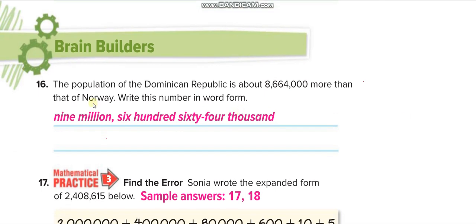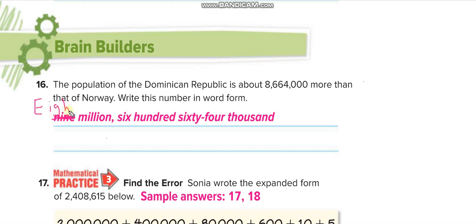The population of the Dominican Republic is about eight million six hundred sixty-four thousand more than that of Norway, so write the number in word form. Note: this is a correction — it's not nine million, it's eight million. So we write eight million six hundred sixty-four thousand.